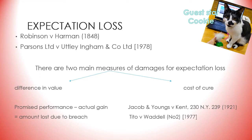However, the difference in value measure may not always be satisfactory. For instance, what if there is no market — for example when goods are manufactured especially for the buyer, such as spacecraft made for NASA? There may not be a market to discover prices in. Also, if the goods are defective but are still retained and used by the buyer, there may not be a market for defective goods of that nature. In these cases it is necessary to consider alternative ways of assessing damages.